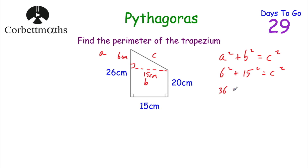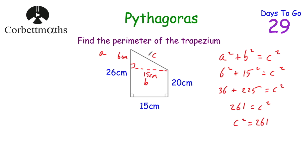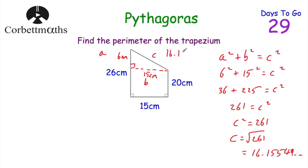6 squared is 36, plus 15 squared — 15 times 15 is 225 — equals C squared. 36 plus 225 equals 261, so C squared equals 261. The diagonal isn't 261 cm — that's the value squared — so we square root: C equals the square root of 261, which equals approximately 16.155 centimetres.